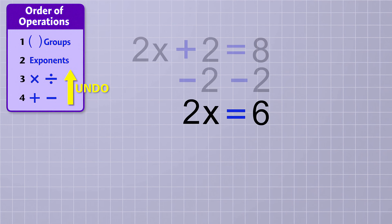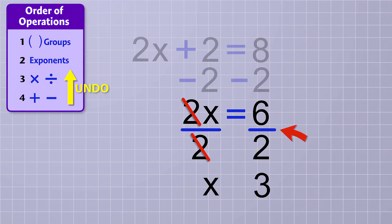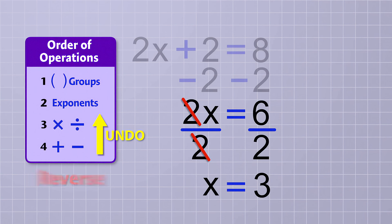Next, we undo the multiplication by dividing both sides of the equation by 2. On the first side, the 2's cancel, leaving x all by itself. And on the other side, we have 6 divided by 2, which is just 3. We've solved the equation using the order of operations rules in reverse, and now we know that x equals 3.